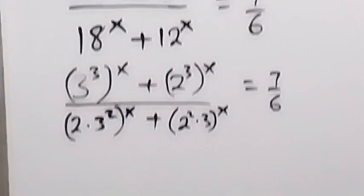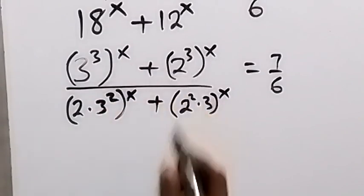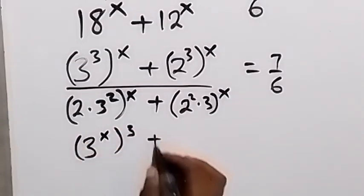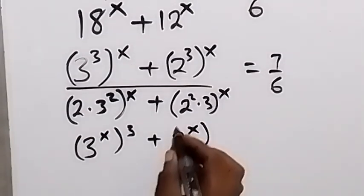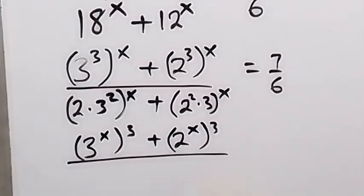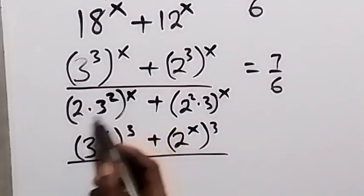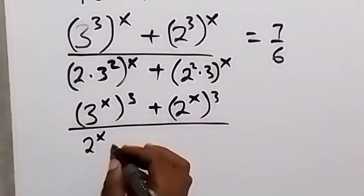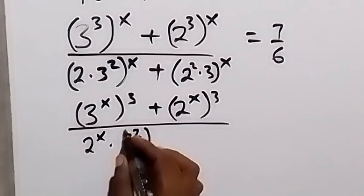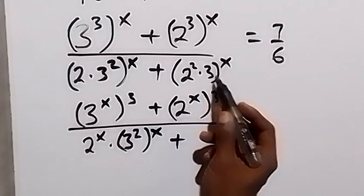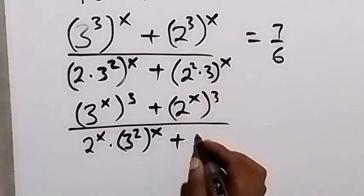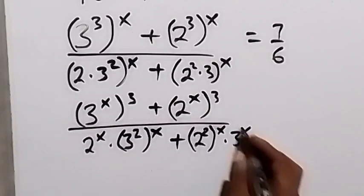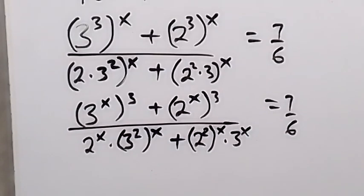In the next step, we interchange the powers. This can be written as 3 raised to power x, then raised to power 3, plus 2 raised to power x, then raised to power 3 in the numerator. In the denominator, we expand using x: 2 raised to power x times 3 raised to power 2x, plus 2 raised to power 2x times 3 raised to power x. This equals 7 over 6.